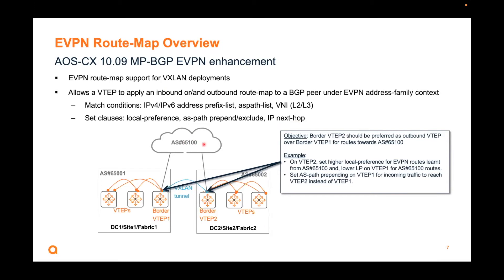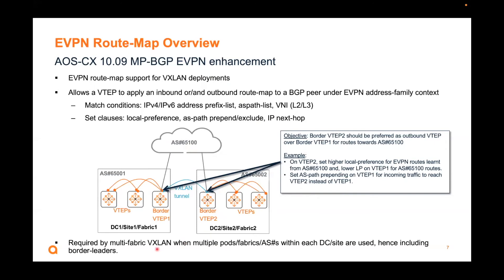Here's an example of what the EVPN route map can do. I have two fabrics and a remote AS number. The objective is to have a border VTAP preferred as the outbound VTAP for all traffic towards that AS number. On VTAP2, you set a higher local preference for routes learned from that AS. On VTAP1, you match on the same AS number but set it lower — so VTAP2 is always preferred. For incoming traffic, you use AS-path prepending. This is just one example, but the main point is: in a multi-fabric VXLan scenario with multiple ports or fabrics per site, you need to use this route map to set the IP next-hop.